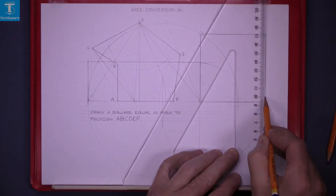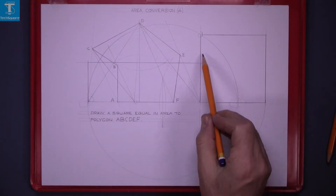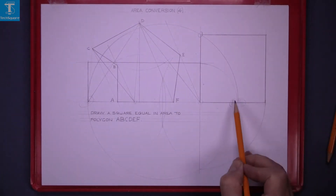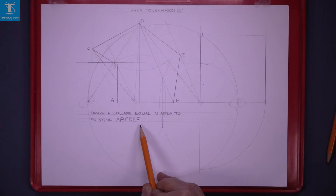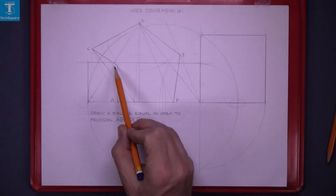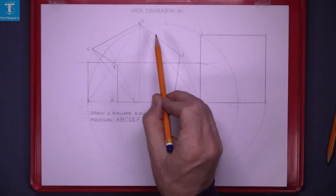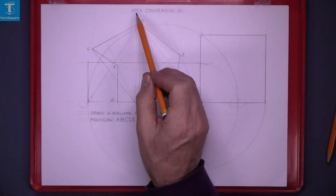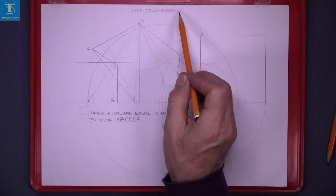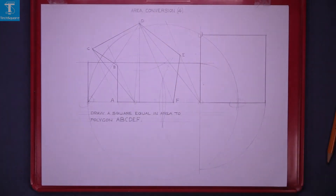Lining up the square, that square is equal in area to polygon ABCDEF. And that's area conversion — complete.